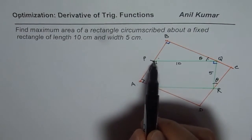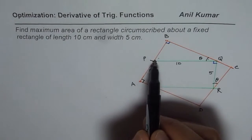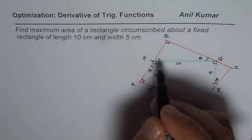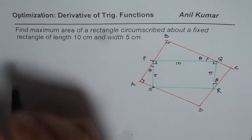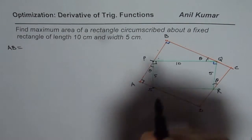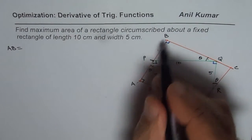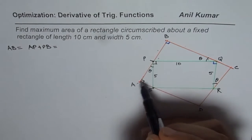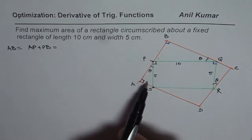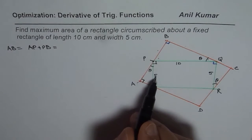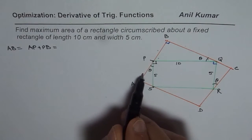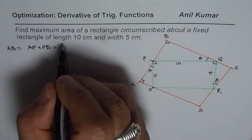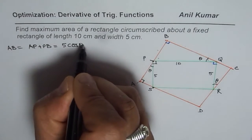Using these sides and the right triangles, we can actually find the sides of the bigger rectangle. Side AB could be written as AP plus PB. AP is the adjacent side in the right triangle where the hypotenuse is 5. Since it is adjacent, we get the length as 5 cos theta. So AP equals 5 cos theta.